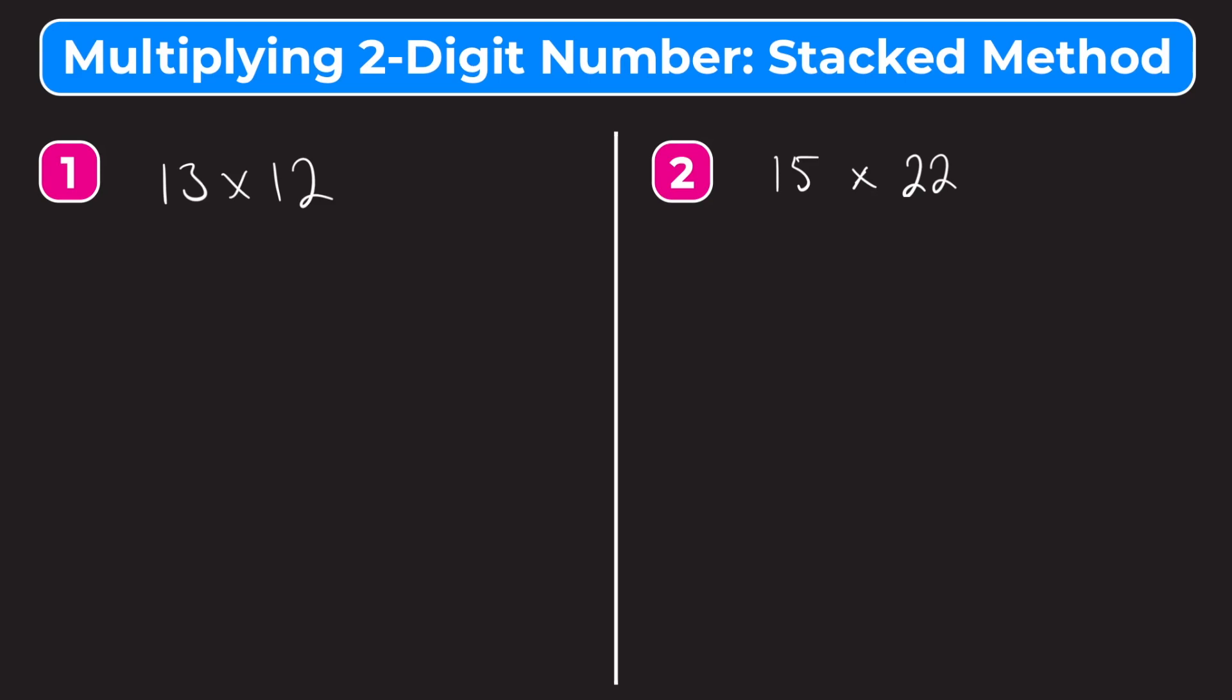So let's try number one. We have 13 times 12. So let's rewrite this with one number stacked on top of the other. Now a tip I usually give is to put the larger number on top. It doesn't really matter as much when you're only dealing with two-digit numbers, but if you start using numbers that are bigger, a three-digit or a four-digit, it makes it easier to go through the problem if the larger number is on top.